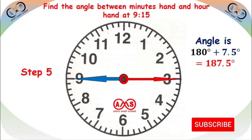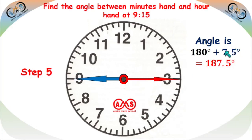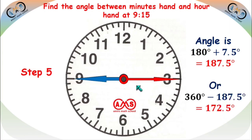Step 5: when the hour hand moves forward, the angle increases. The original angle is 180 degrees plus 7.5 degrees, which is 187.5 degrees. The other angle is 360 minus 187.5, which is 172.5 degrees.